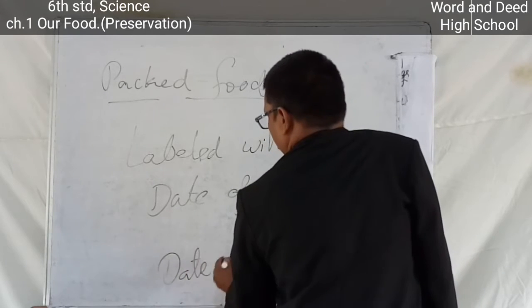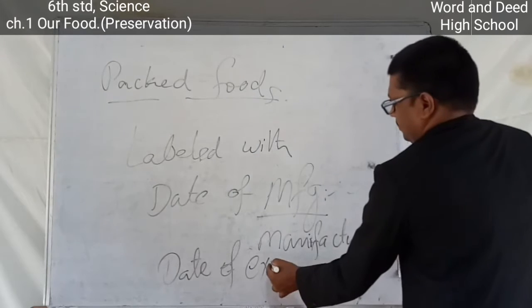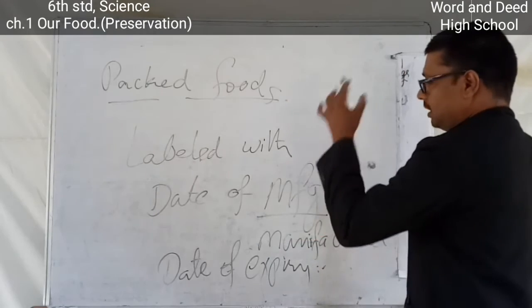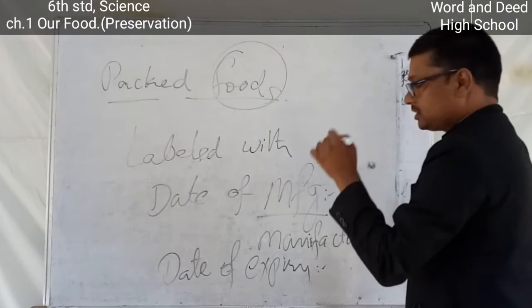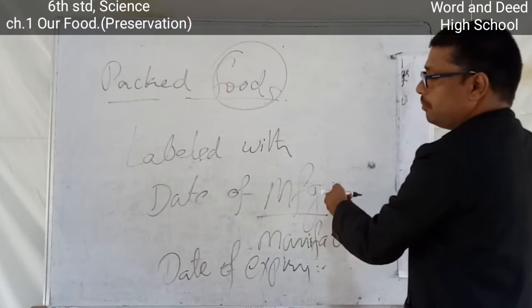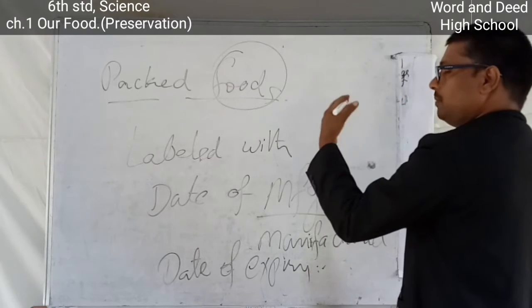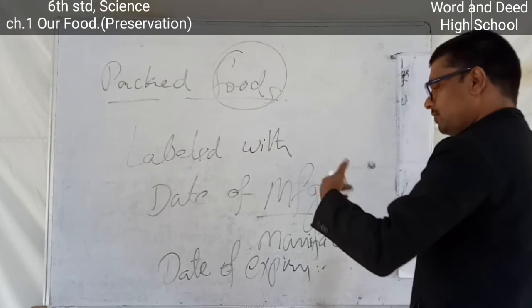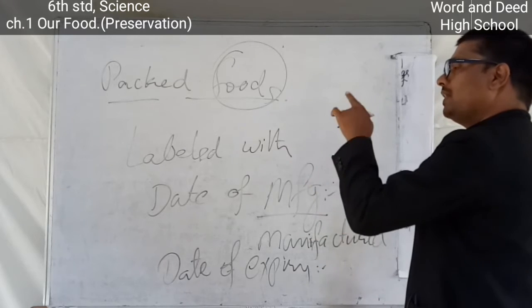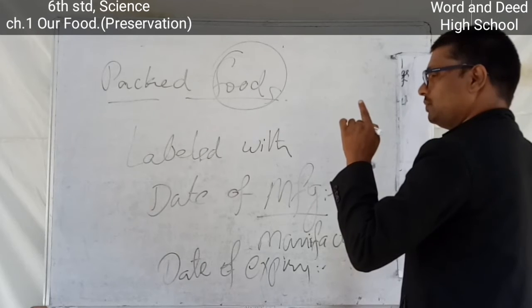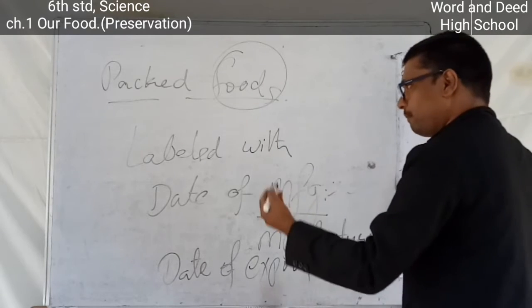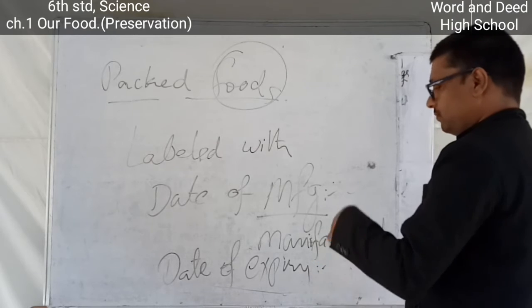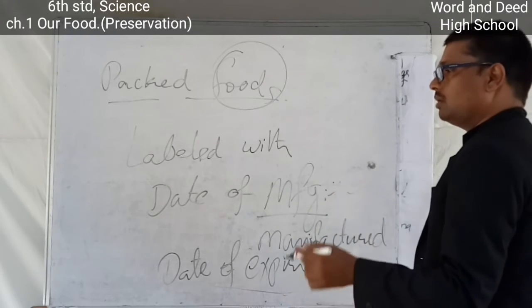Next, check the date of expiry. The packed food must be used between the date of manufacturing and the date of expiry — that is when it will be of good quality. If that time is exceeded, the food will get spoiled. We should not buy packed foods whose date of expiry is expired or crossed.